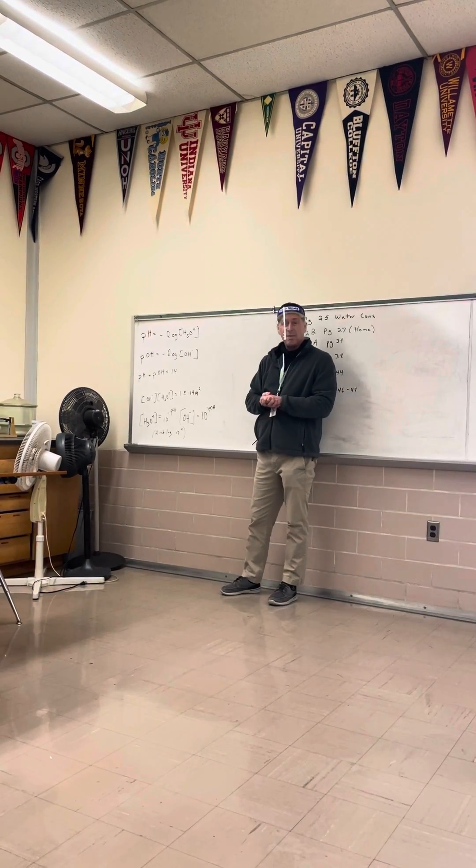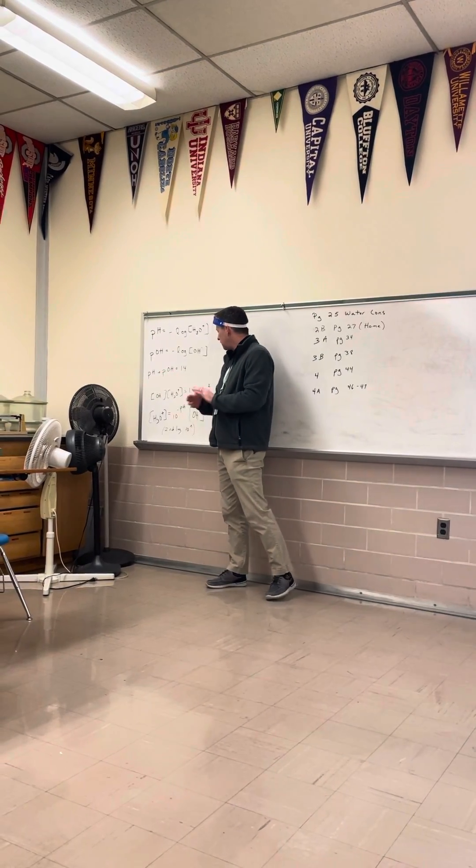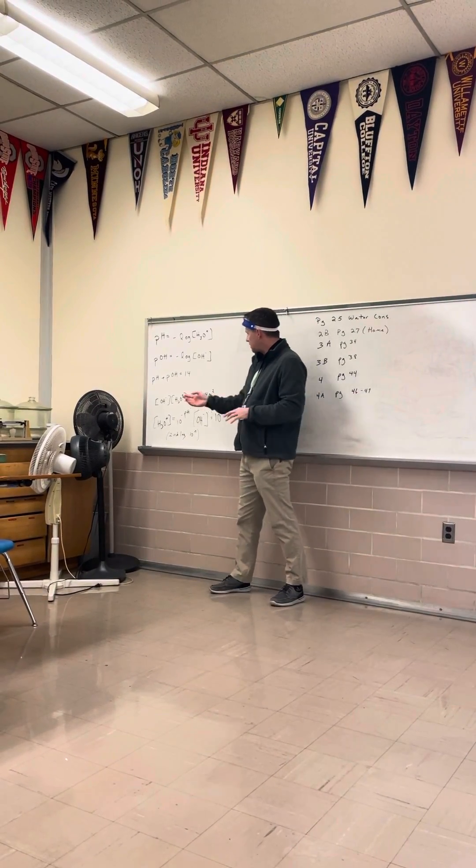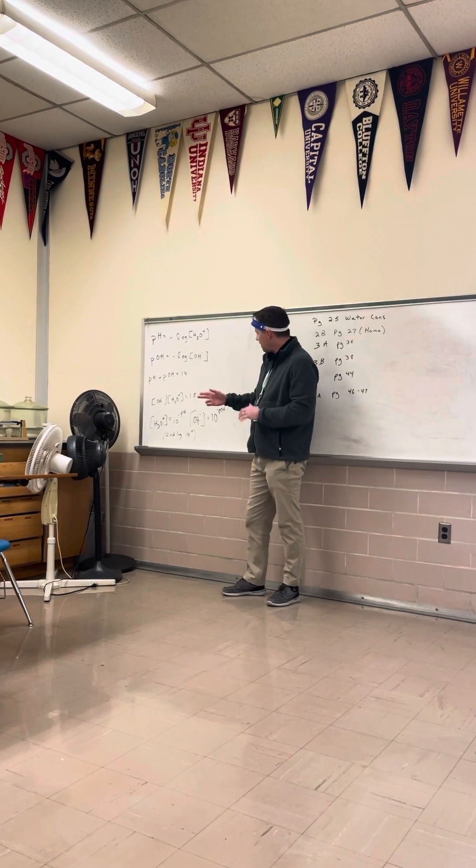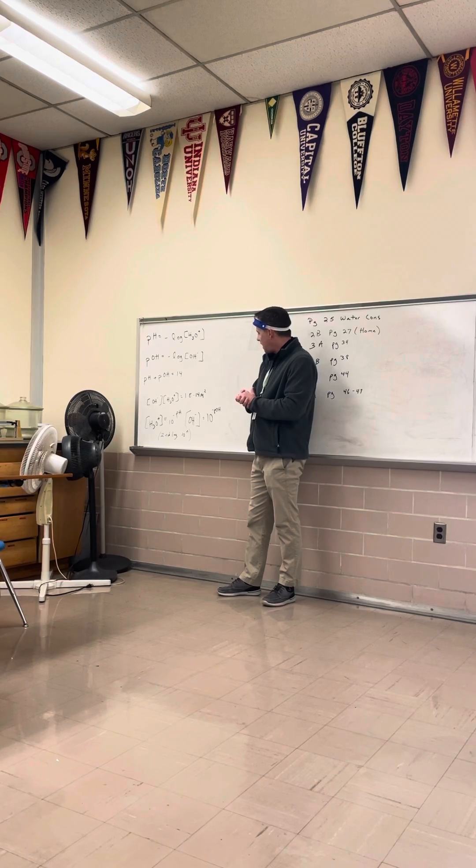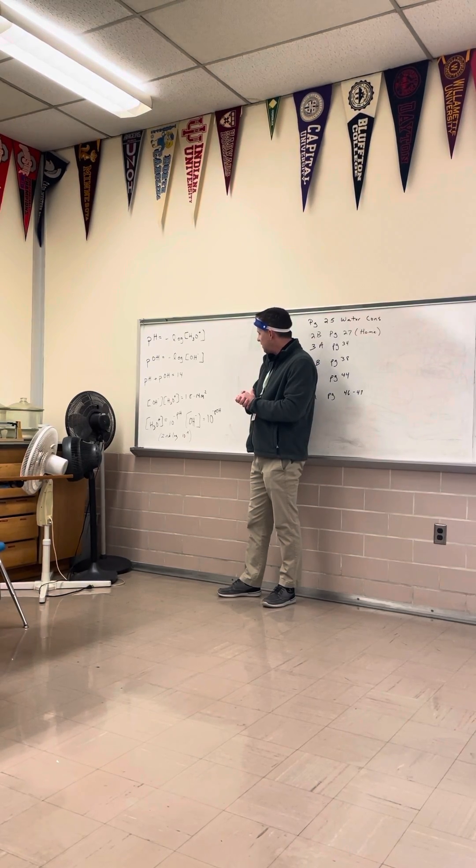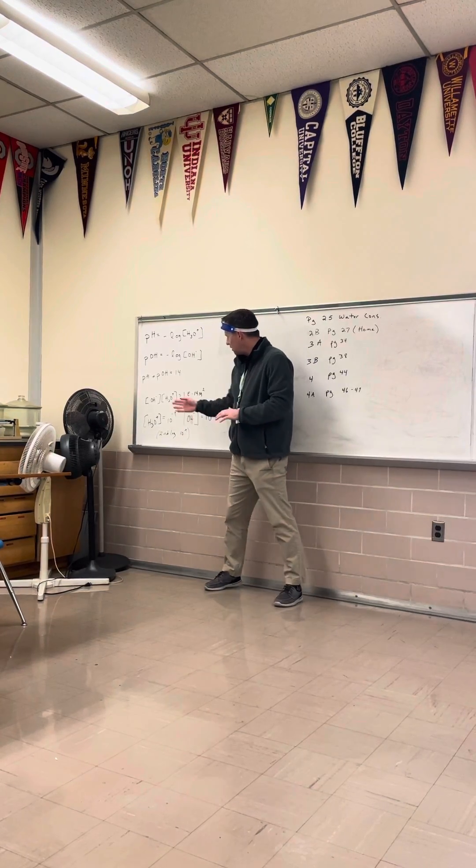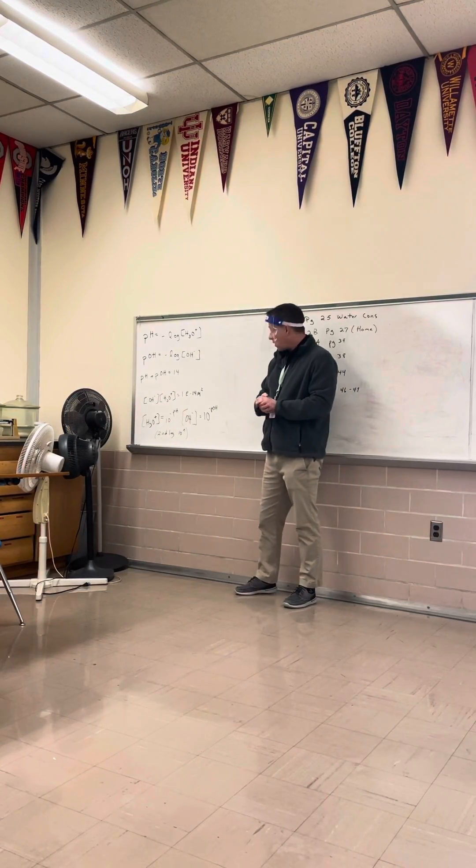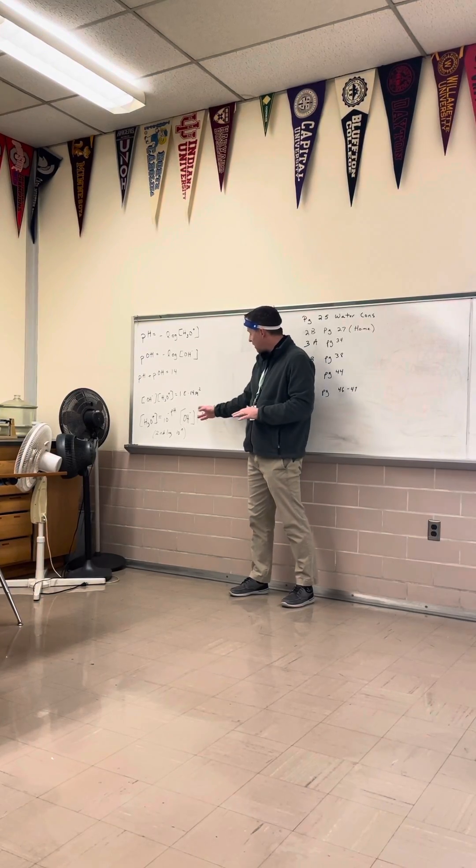When you add the pH numbers together, pH plus POH will equal 14. This one is OH- times H3O+ equals 1E to the minus 14. And then to find the H3O+ or the OH-, you would take 10 to the negative pH for H3O+, or 10 to the negative POH for OH-.